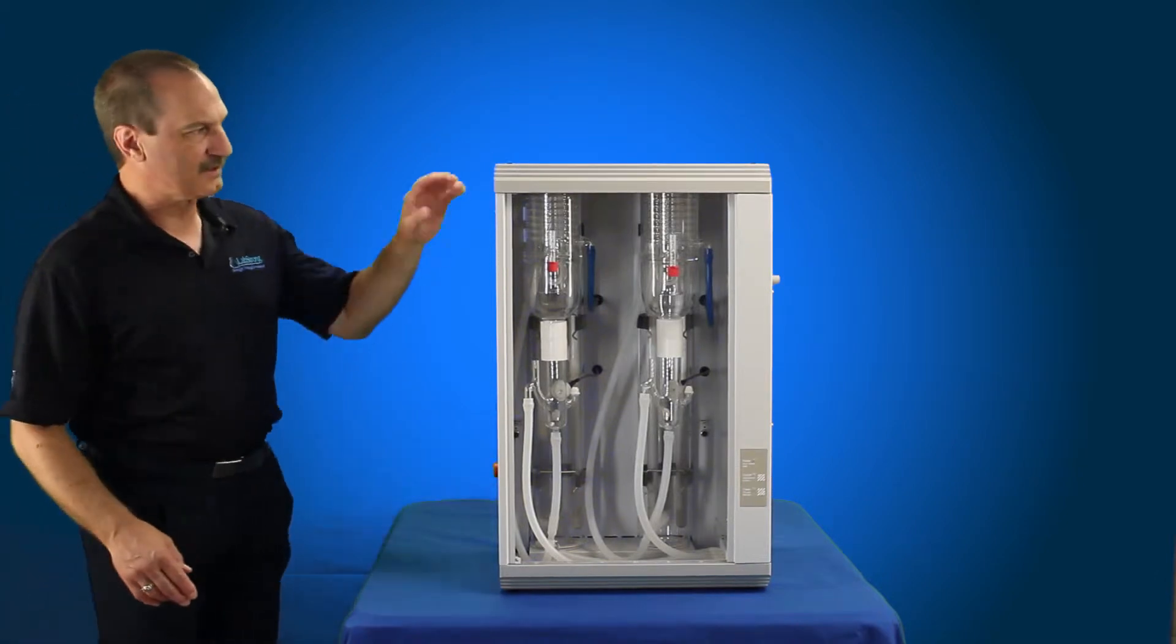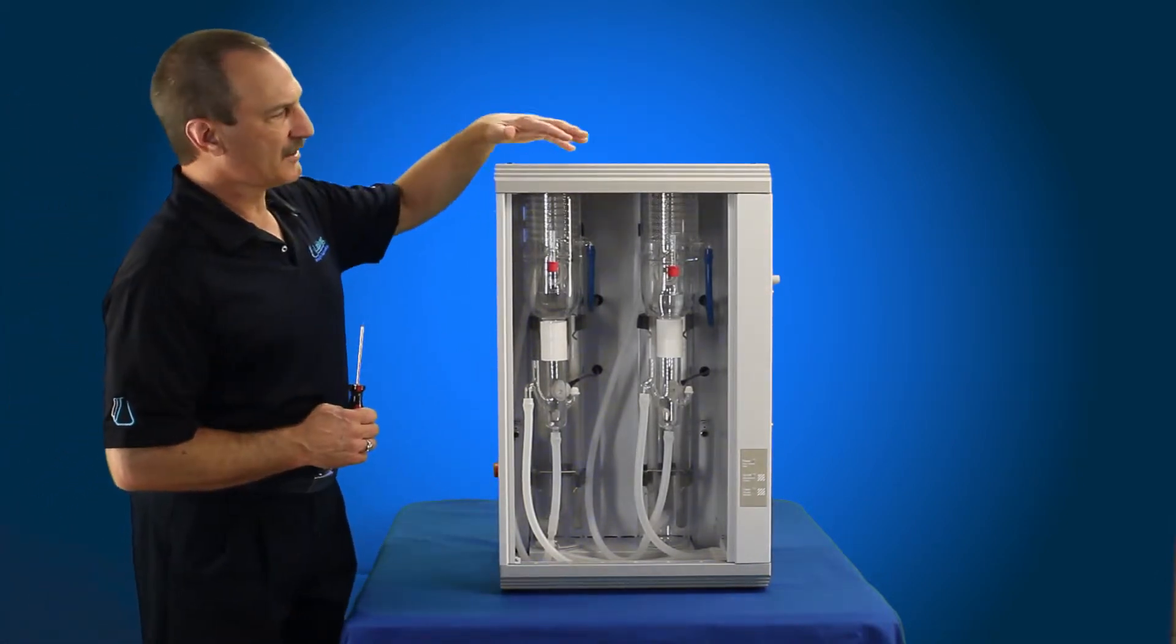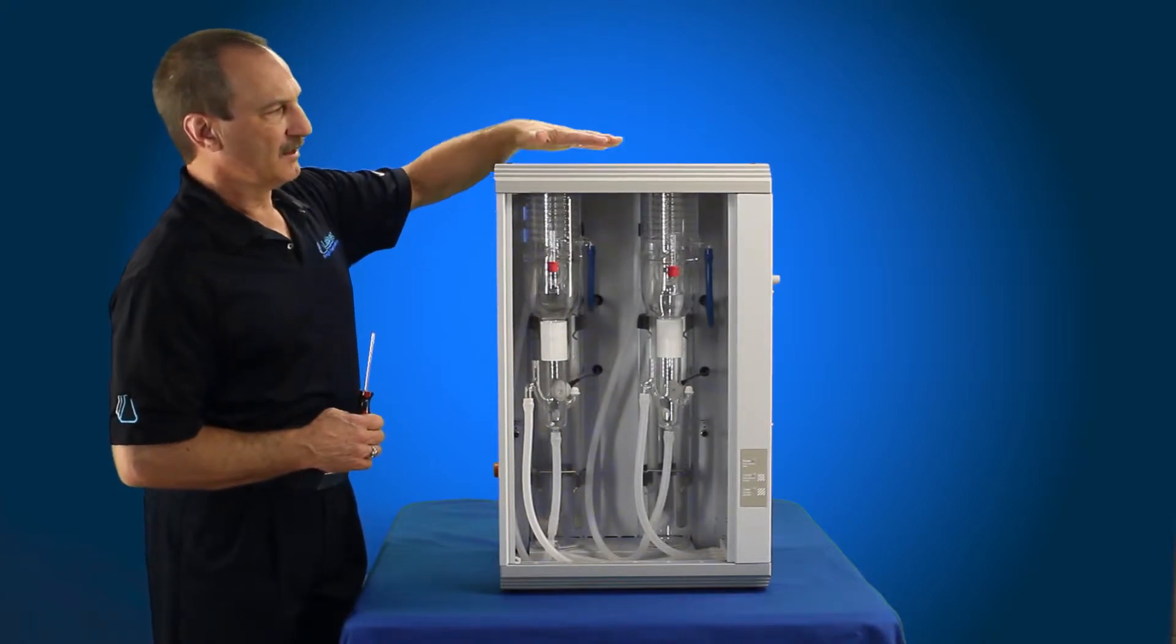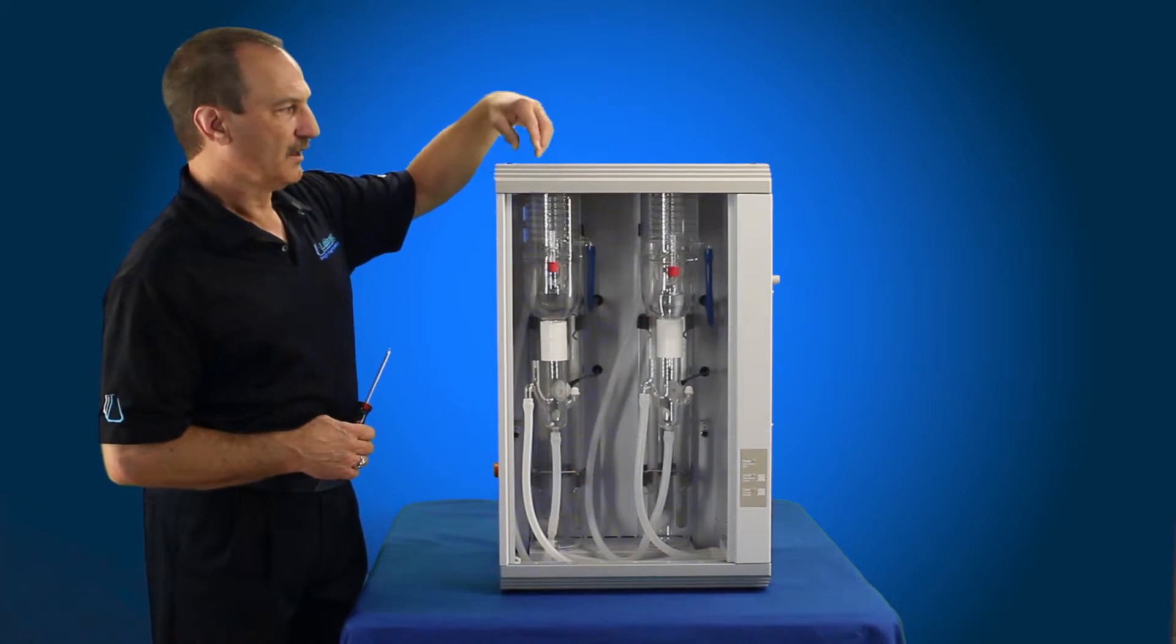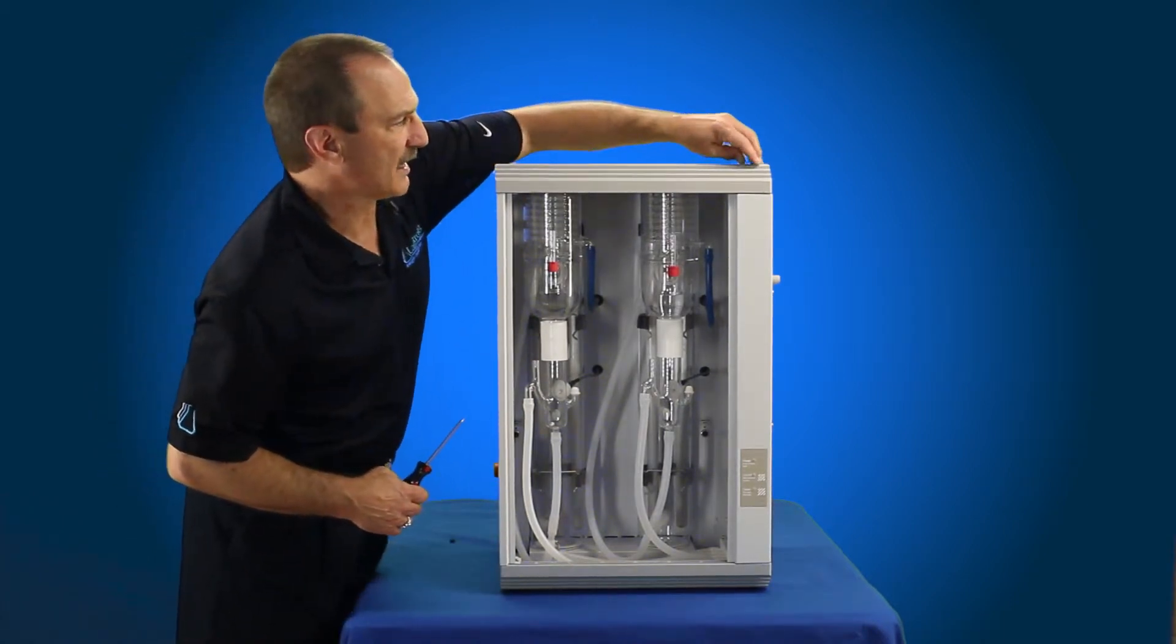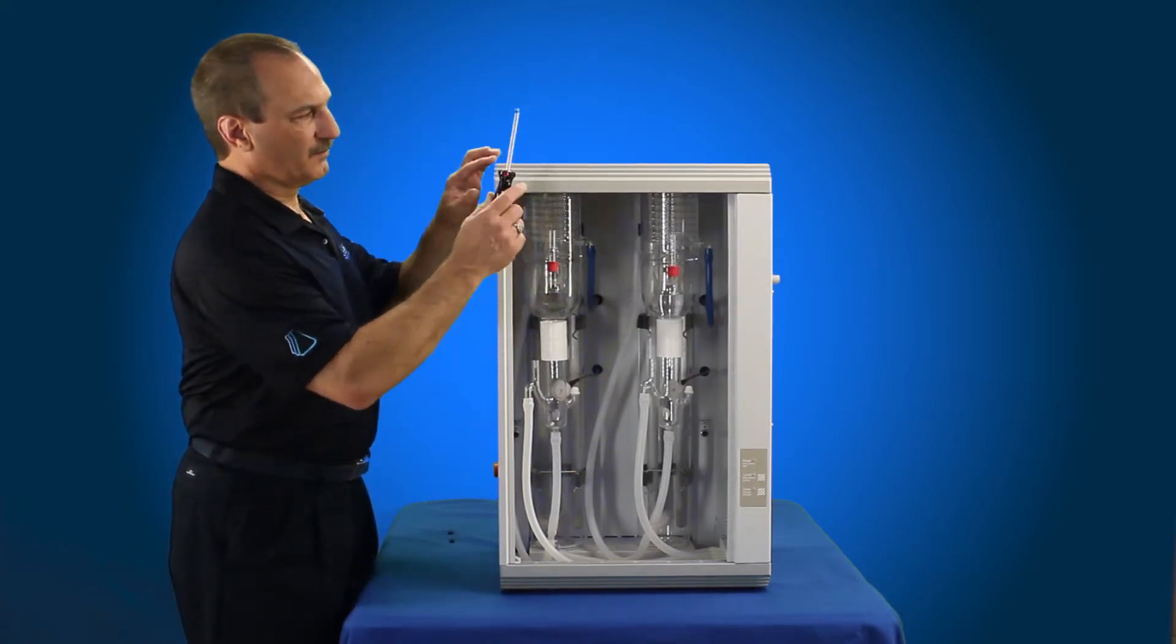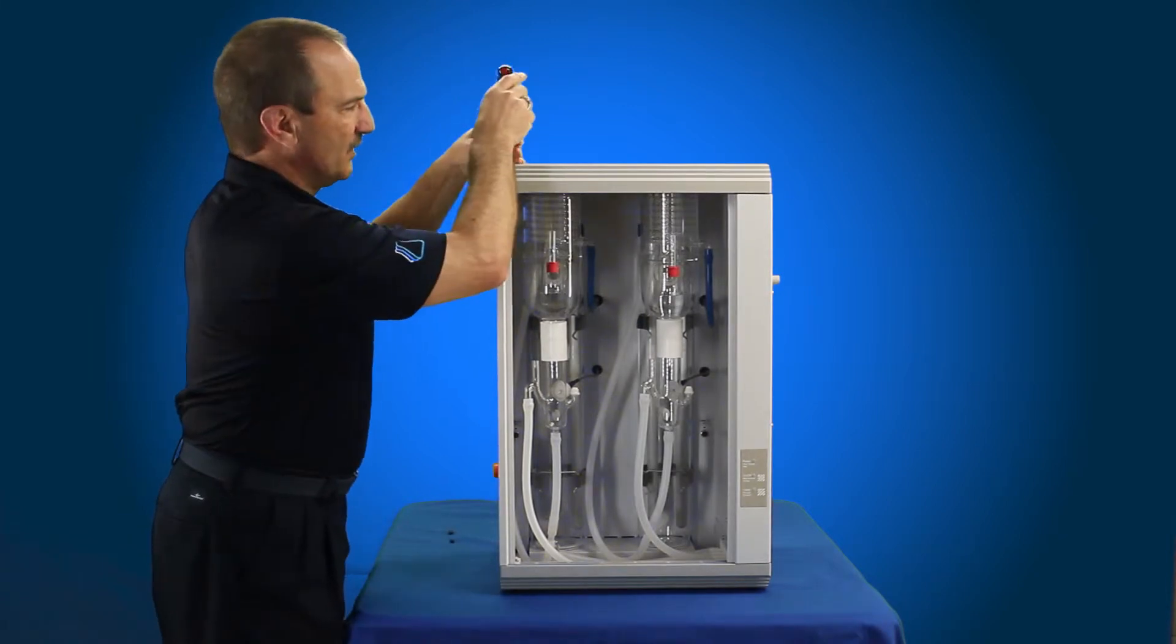Now we're going to go ahead and remove the top cover. Top cover for the eight-liter, the four-liter bi-distiller, same size. The top cover for the four-liter bi-Stream 3 is just a little smaller, but still has the same two blanking plugs that you're going to remove from the top. A Phillips-head screwdriver, two Phillips-head screws. I'm just going to go ahead and remove the screws from the front.